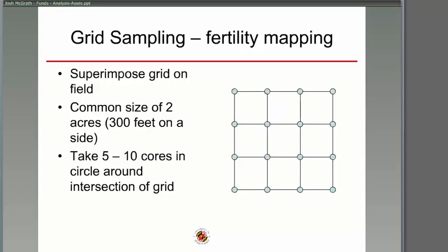Grid sampling gained a lot of popularity for a while, then went down, and now seems to be coming back. You impose a grid on the field — maybe each grid is 300 feet on a side — and take five to ten cores in a circle around each intersecting point within the field, which covers the whole field. It's a pretty intensive way of sampling.